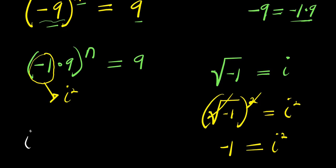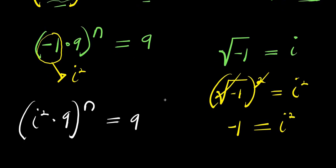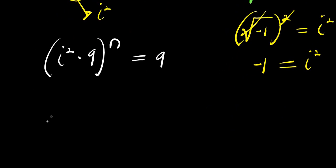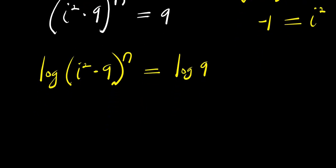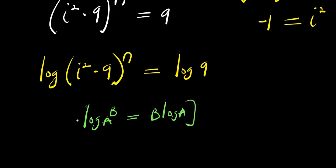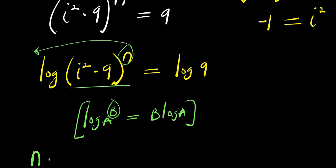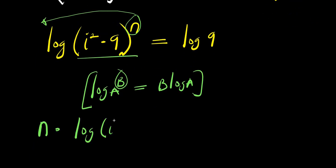So what we are simply going to have is i to the power of 2 times 9 raised to the power of n, equals 9. Now applying the logarithm identity: if you have log of a raised to the power of n, this equals n times log a. So n will come in front, giving us n times log(i² × 9) equals log 9.